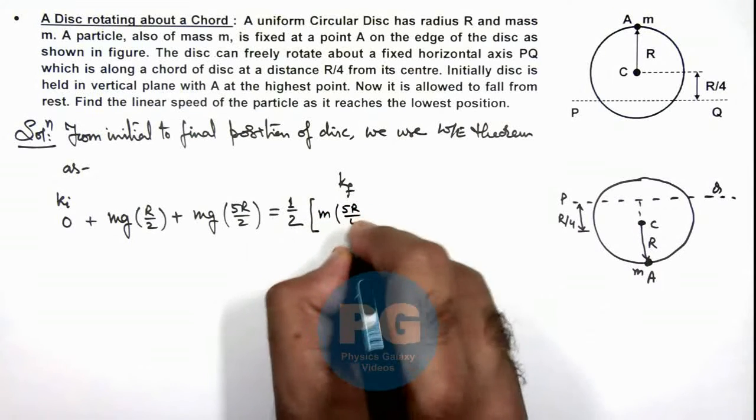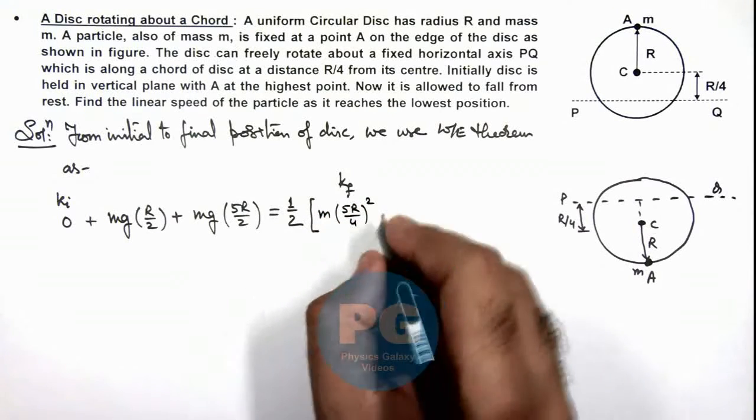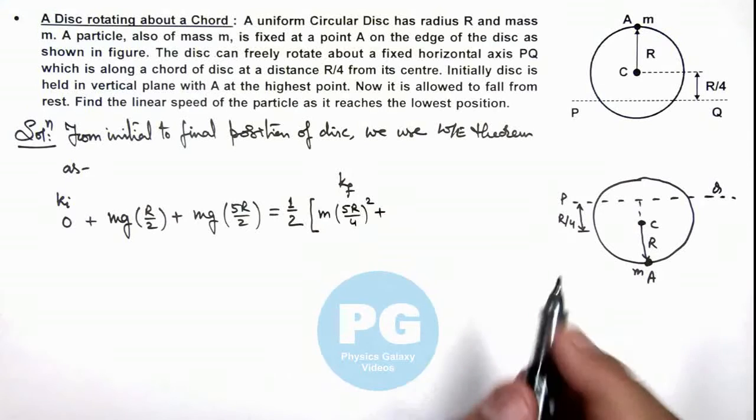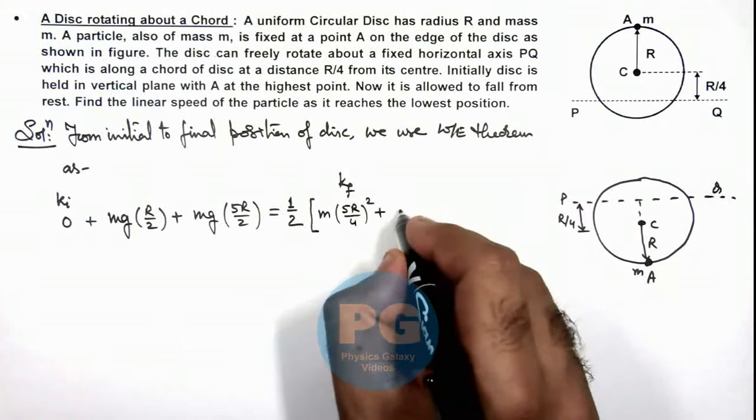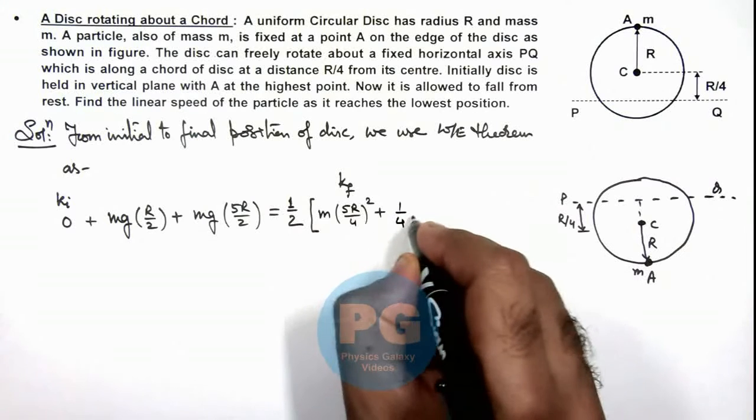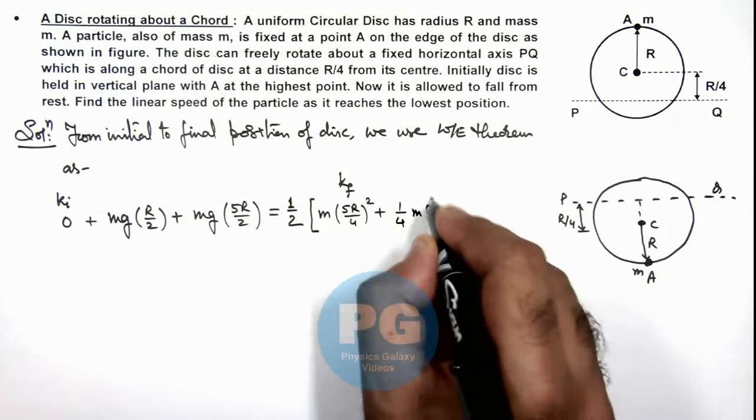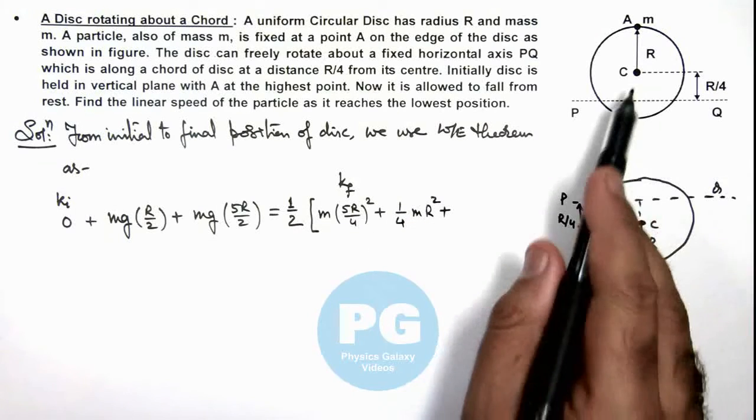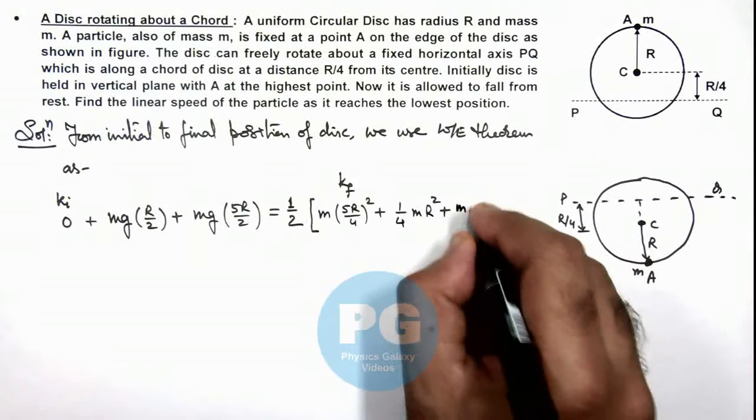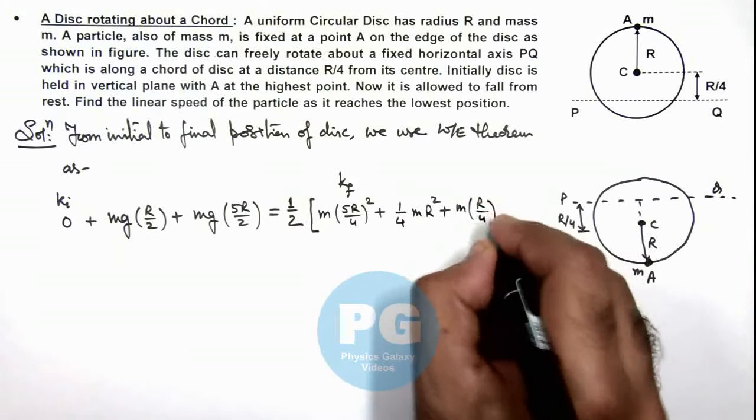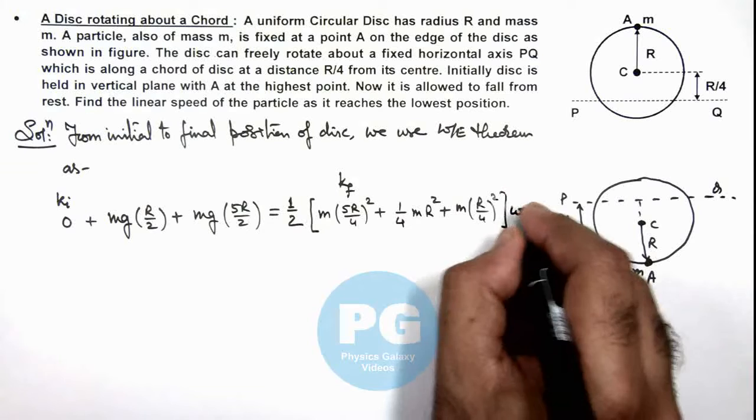For this point mass, as it is at a distance 5R by 4, its moment of inertia we can write as m times (5R by 4) whole square, plus the moment of inertia of disc about the central diametrical axis is 1 by 4 mR square, plus we use the parallel axis theorem, we use md square, this is m multiplied by (R by 4) whole square, multiplied by omega square.